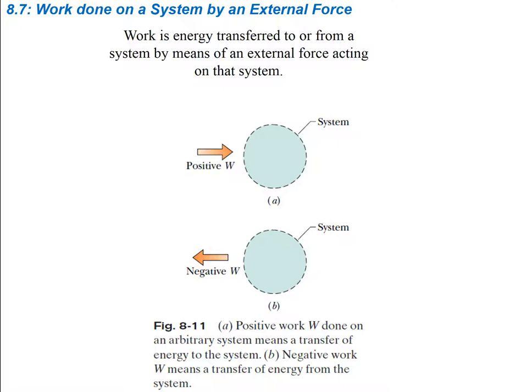In previous problems, we've used systems of objects before, but we didn't necessarily define what a system is. A system is going to be the objects that are really involved in the problem. For instance, if you have a block that's falling down to the earth, the system is just going to include that block. But if this block was connected to another block, then both blocks are going to be in that system.